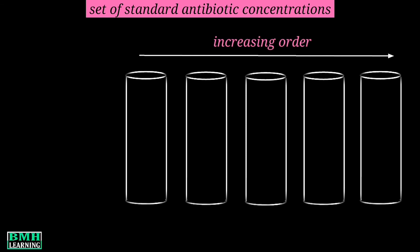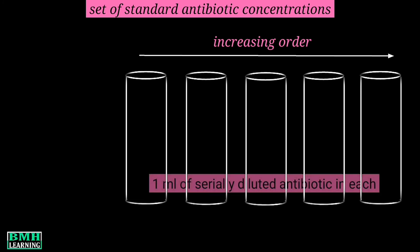We are transferring one ml of serially diluted standard antibiotic in each tube. So the first tube has minimum concentration while the fifth one in the line has maximum concentration.